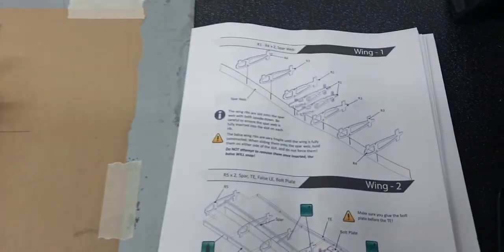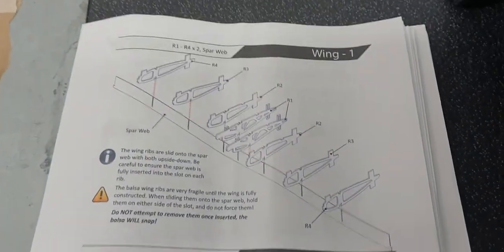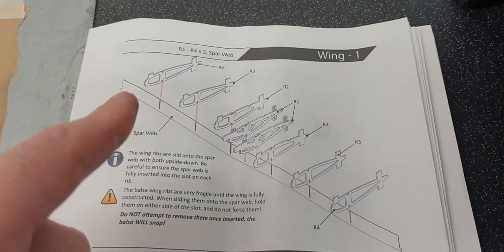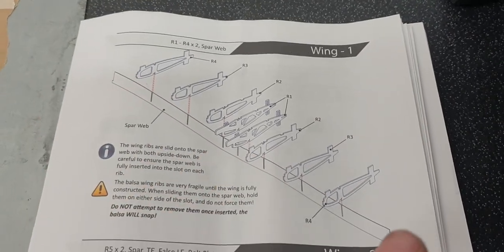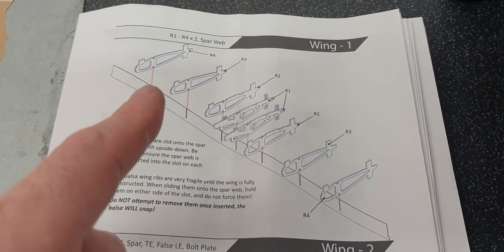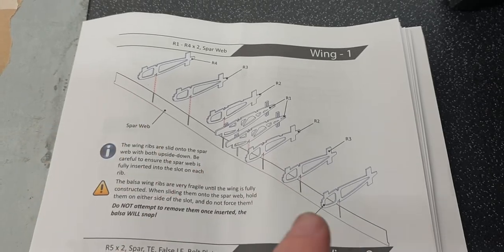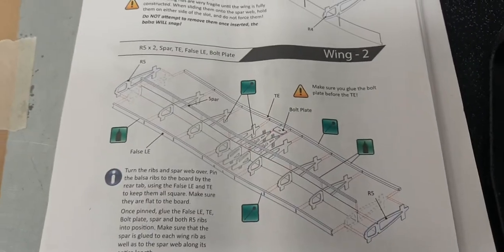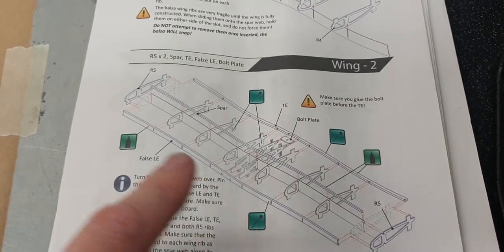Going over to the wing, the instructions are really good and fairly self-explanatory. It just shows you to slot the ribs onto the main spar there. The spar web is only 1/32 ply, so it's very, very flexible at this stage.